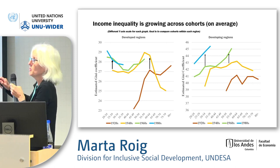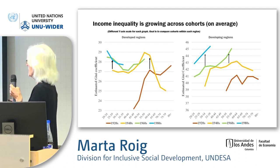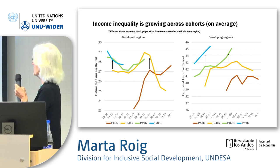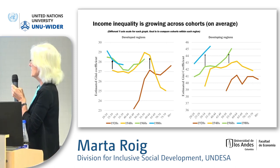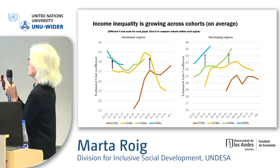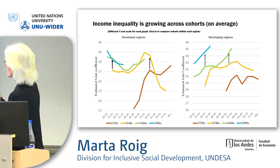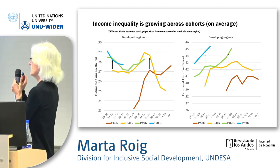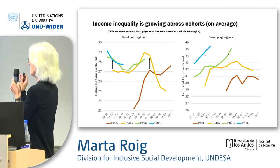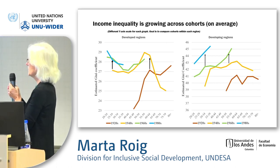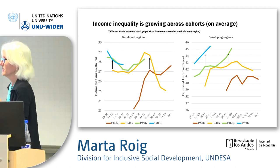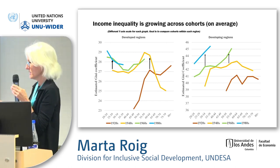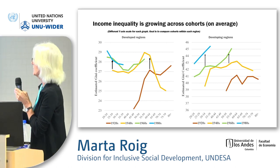Up to the cohort of the 1980s, there is an increase in inequality. We don't know about the next cohorts, but at least for the next 25 to 30 years, we can expect based on these trends that older persons in the next 20 to 30 years may be more unequal once they reach old age — all else being equal.